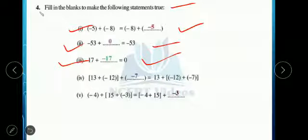Fourth one. 13 plus minus 12 plus dash equal to 13 plus bracket minus 12 plus minus 7. Which number is missing? Minus 7 will come. Because according to associative property, we have ABC numbers. We can group any 2, then add with the third number. So minus 7 is missing.